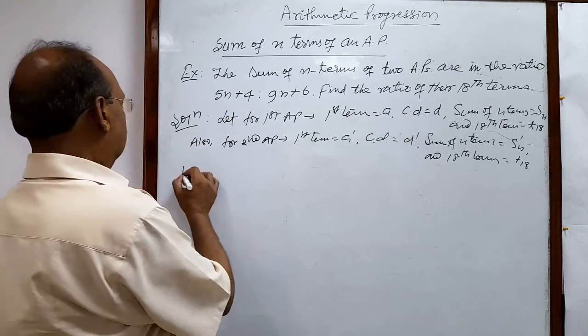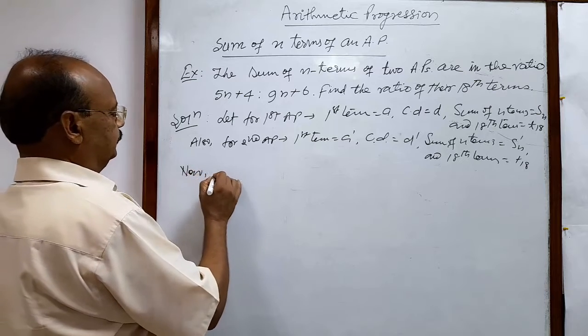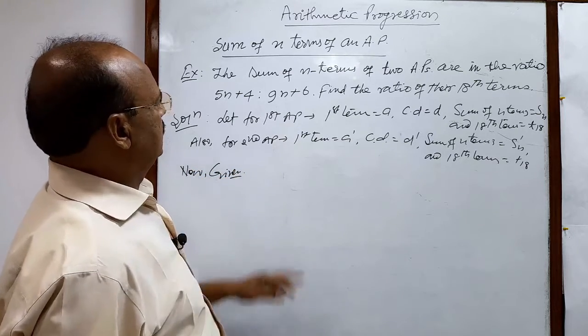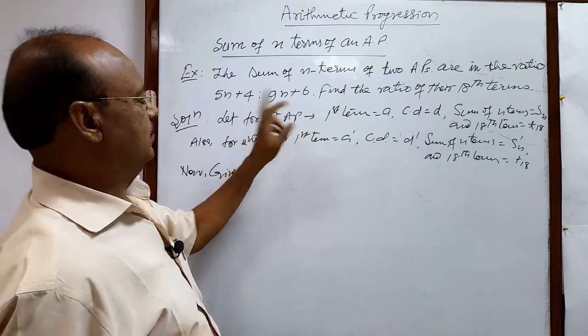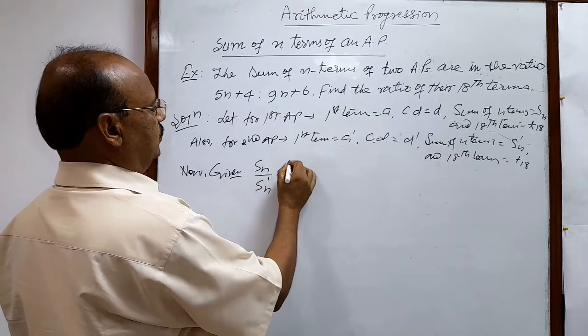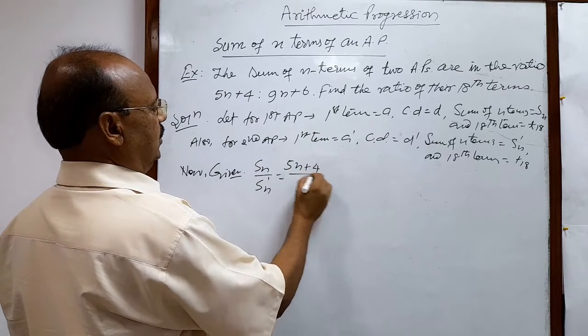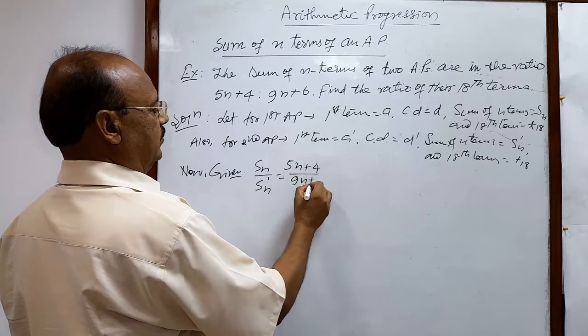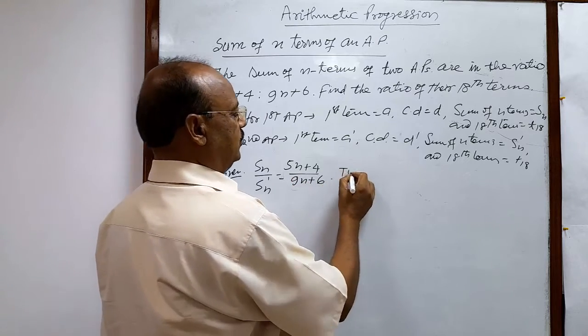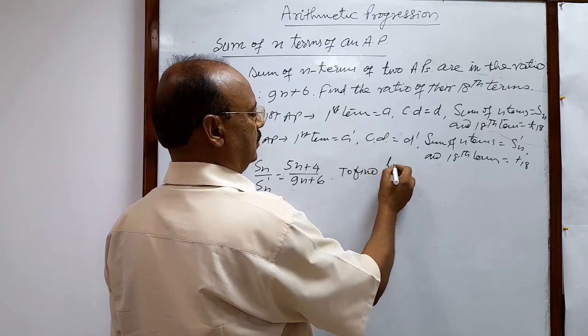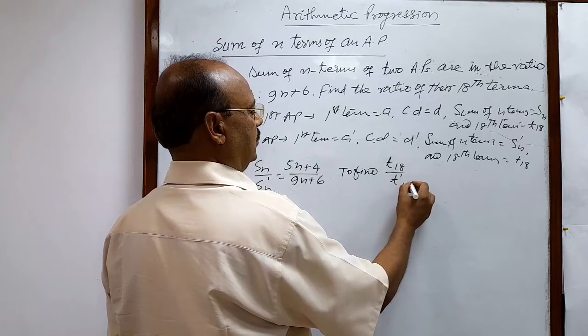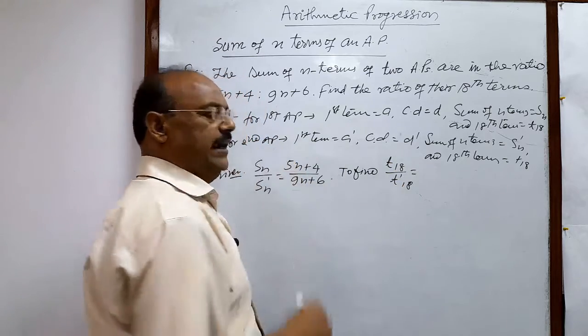Now what is given here? Sum of their n terms is this much, means Sn by Sn dashed is equal to 5n+4 divided by 9n+6. This is given. And what we have to find out: to find t18 by t dashed 18, ratio of 18th term.